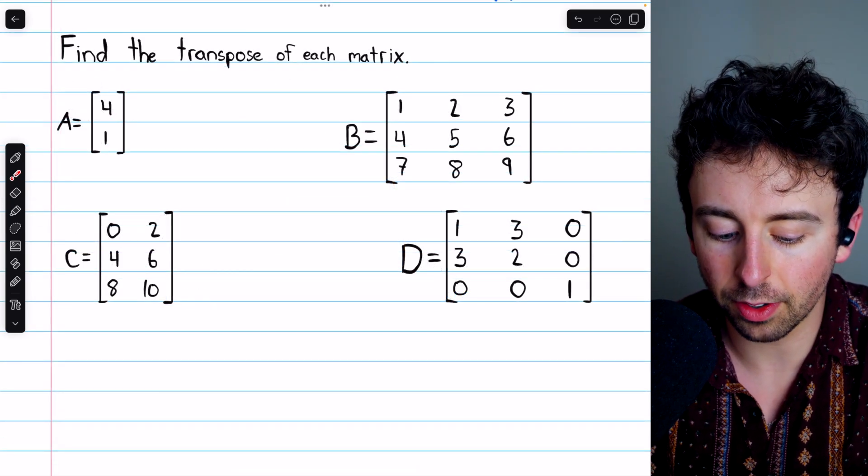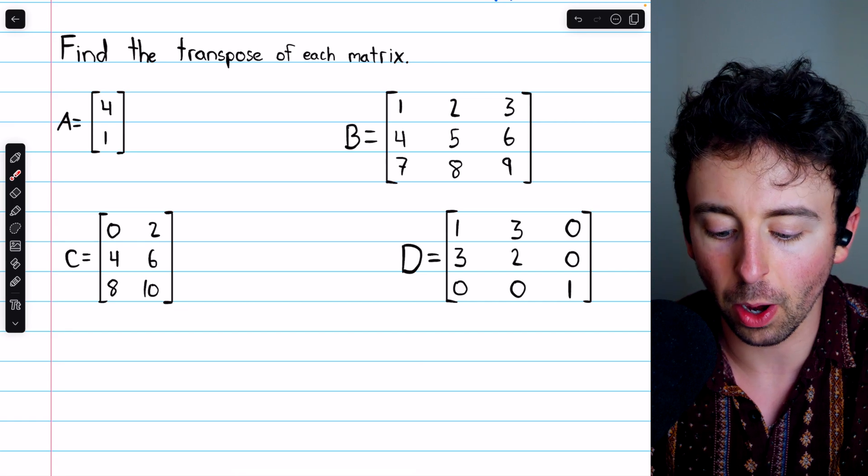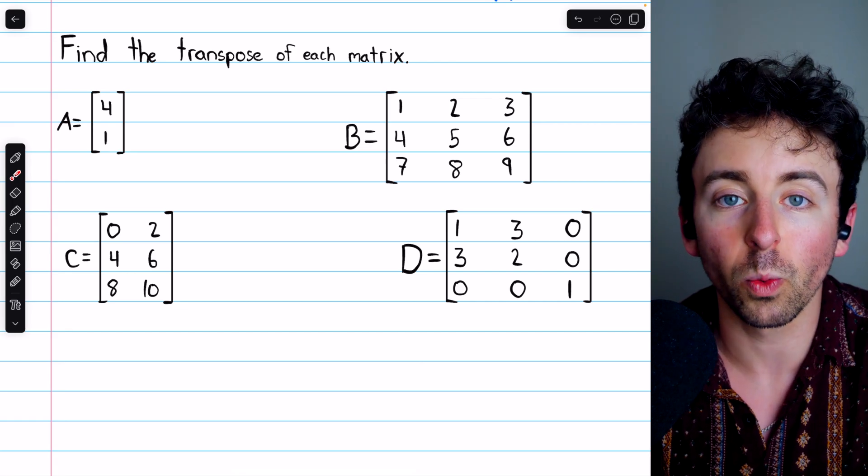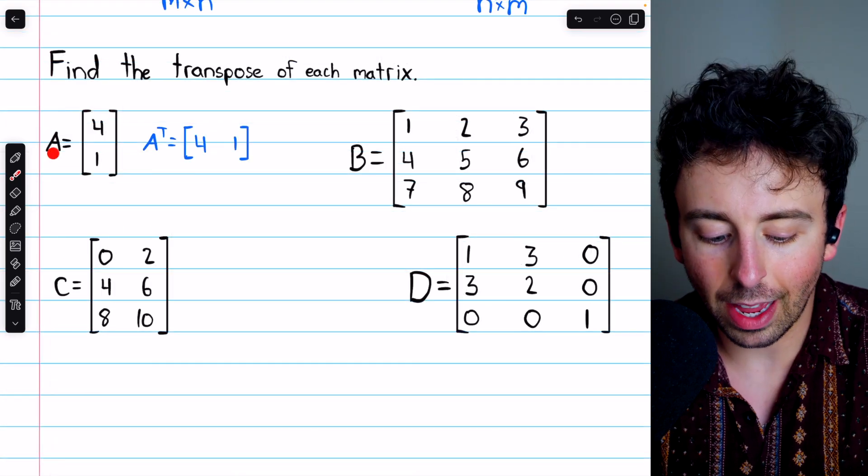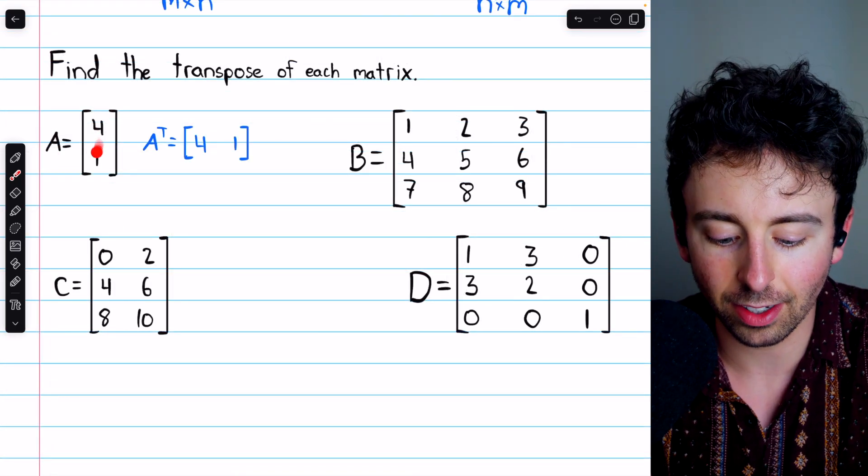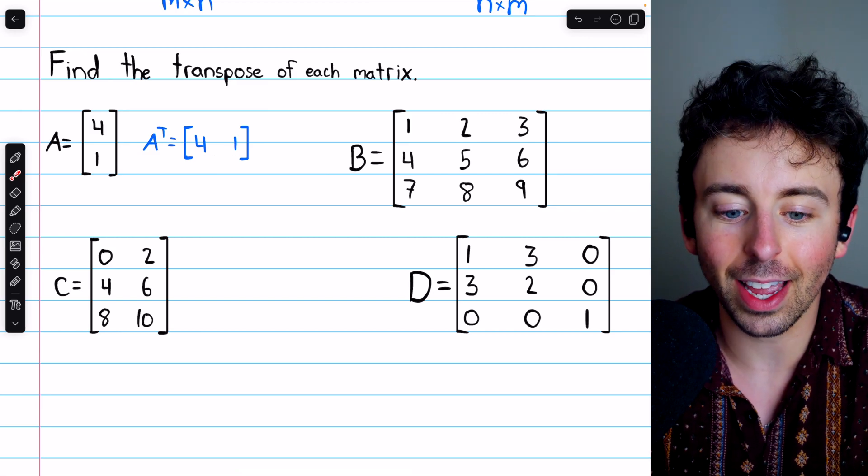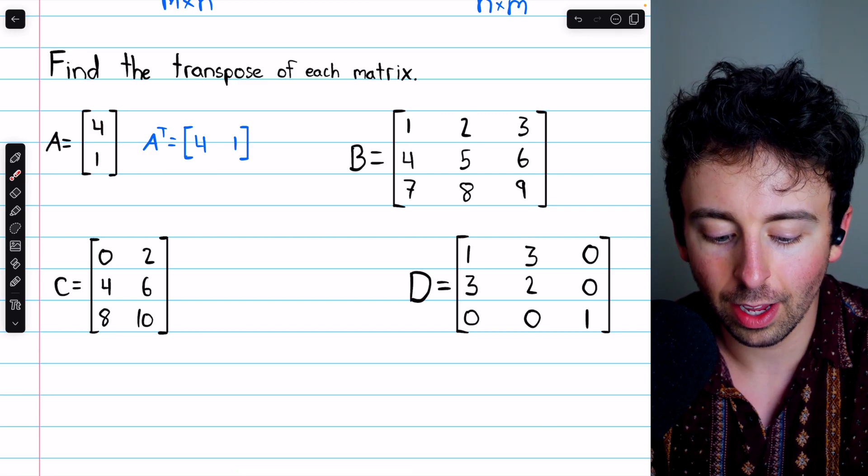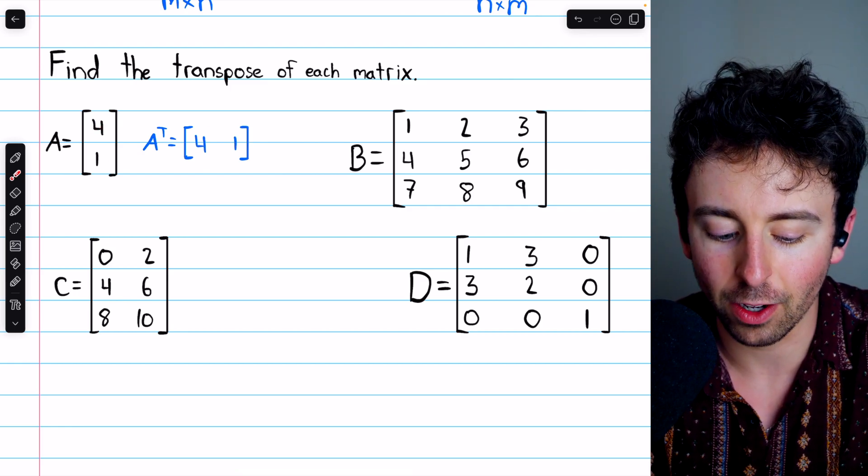Here are four examples. You can pause the video and try them yourself, finding the transpose of each matrix before watching on. Let's go over the solutions now. The matrix A has a single column. To find A transpose, that single column becomes the single row. You could also think of it as A having two rows and so each of those rows becomes a column in A transpose.